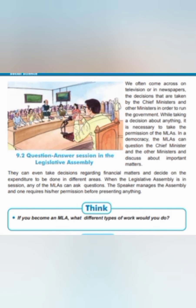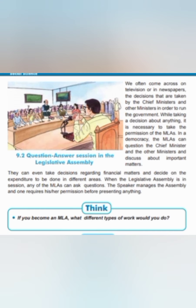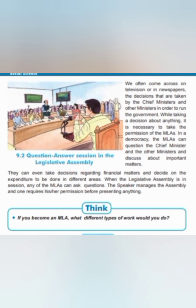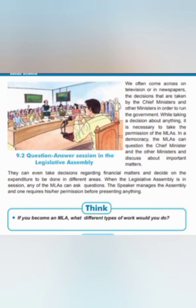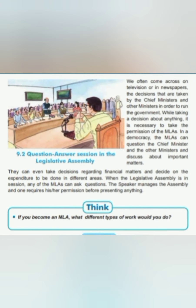We often come across on television or in newspapers the decisions that are taken by the Chief Minister and other ministers to run the government. While taking a decision, it is necessary to take the permission of the MLAs. In a democracy, the MLAs can question the Chief Minister and other ministers, discuss important matters, and decide on expenditure in different areas. The MLAs elect one member as the speaker and another as the deputy speaker to manage the assembly. For any presentation or questioning, the permission of the speaker or deputy speaker must be sought.